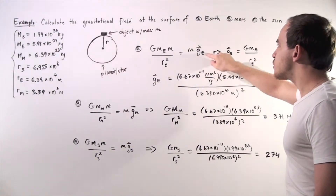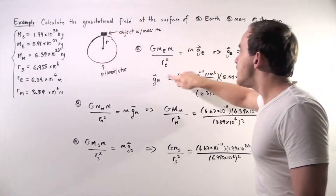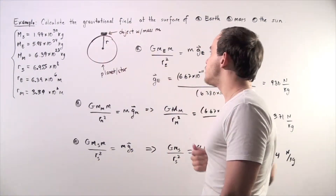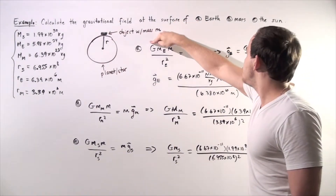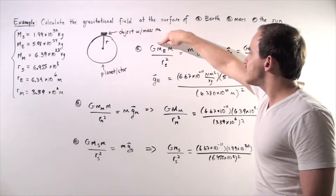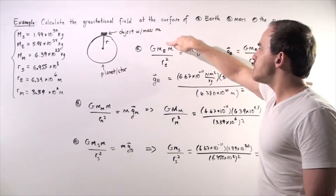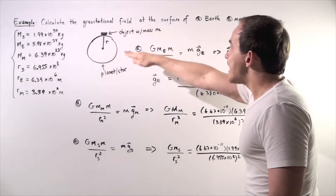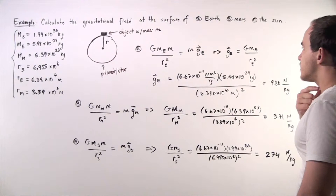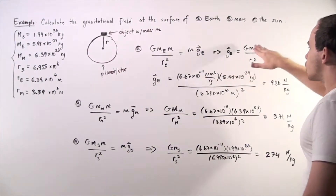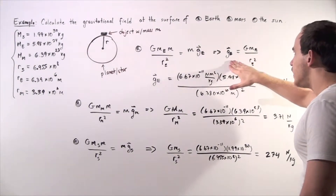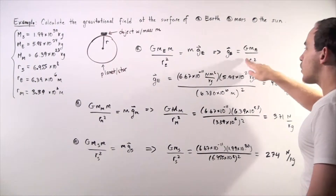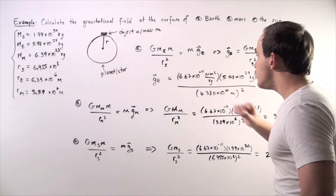We solve for the gravitational field. The gravitational force due to the Earth on the object with mass m is: the gravitational constant G multiplied by the mass of the Earth multiplied by the mass of the object, divided by the radius of the Earth squared. Notice the m's — the mass of the object — appear on both sides, so we cross them out. Our gravitational field equals G times the mass of the Earth divided by the radius of the Earth squared.